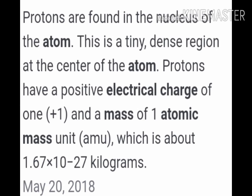Protons are found in the nucleus of the atom, which is the tiny dense region at the center of the atom. Protons have a positive electric charge of plus one and a mass of one AMU, which is about 1.67 into 10 to the power minus 27 kilograms. This was the outcome of the experiment that Goldstein did using the cathode ray tube.